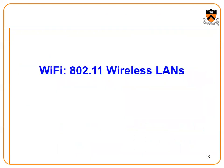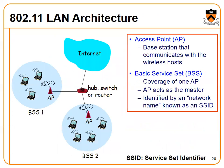Wi-Fi 802.11 wireless LAN operates under the 802.11 standard. BSS1 and BSS2 access providers are present, along with a central device like a hub, switch, or router. This is the architecture of 802.11: the access provider sends a reply to the base service station for re-acknowledgement.